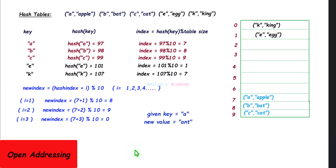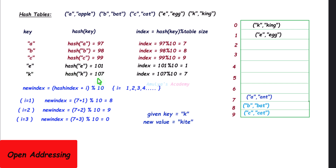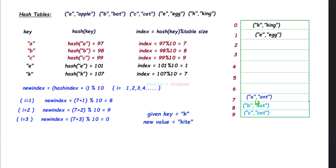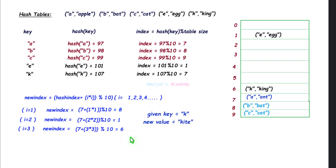For the open addressing method, I want to update the value for key 'a' to 'ant'. Find its index — 7 — go there and compare the key. Yes, match found, so update the value. For another example, I want to replace 'king' with 'kite'. Find the index, go there, and check whether that slot is empty — no. Compare the keys — no match, so according to linear probing, check the next slot at index 8 — no match. Check the next slot — key is found, update the value. If it is quadratic probing, you check the first slot, then the eighth, then the sixth; when the key is found, update the value.